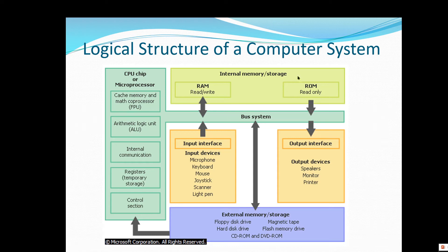You have RAM and ROM memory. When you buy a computer, you spec out some RAM memory — when you're talking about memory, you're really talking about RAM. So if it's 16 gigabyte or 32 gigabyte, pretty common now, that's what you're referring to. This is just temporary storage for programs and data. When you're working with a program, it's actually stored in RAM while you're working with it, or the CPU is working with it.